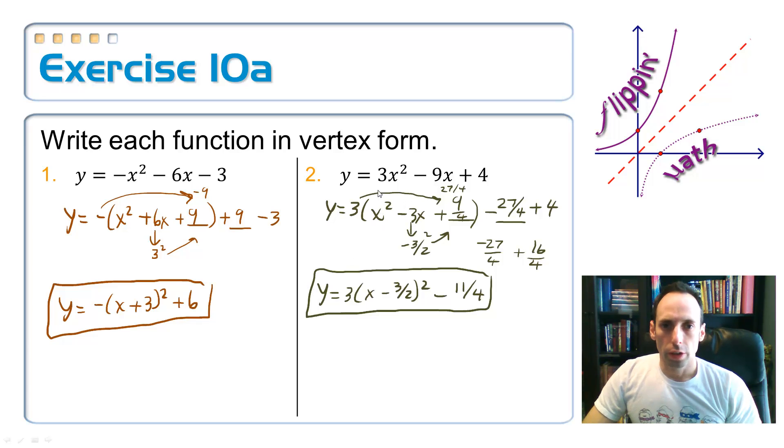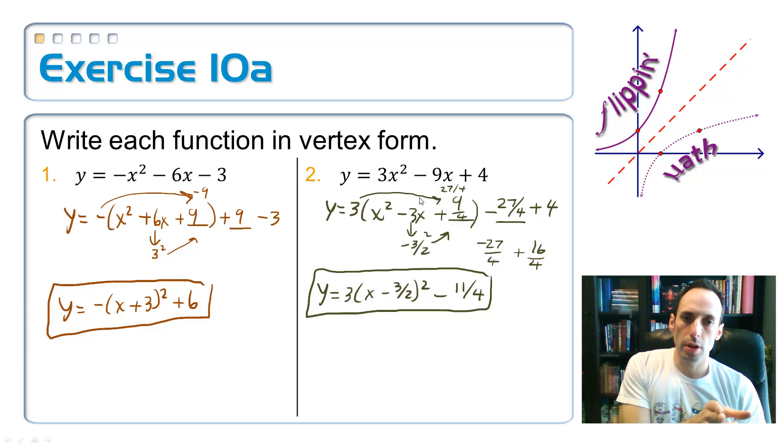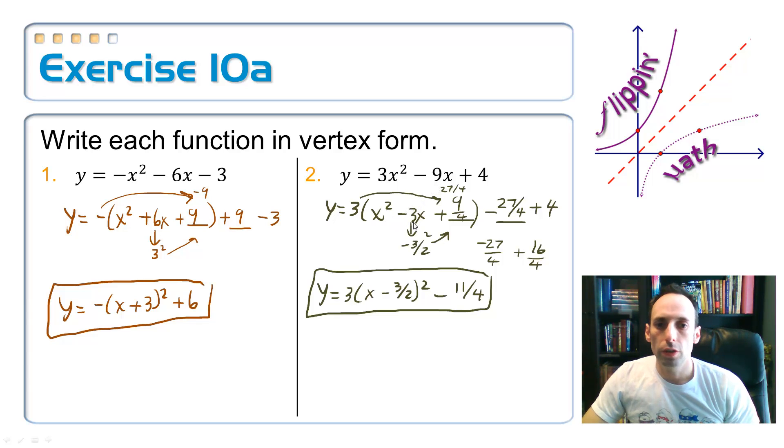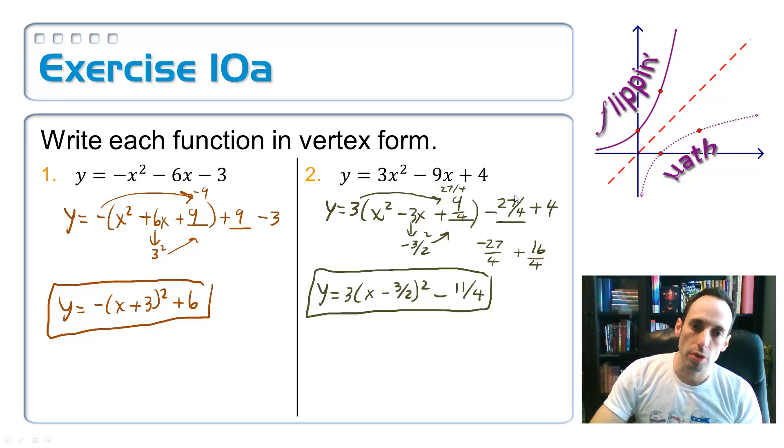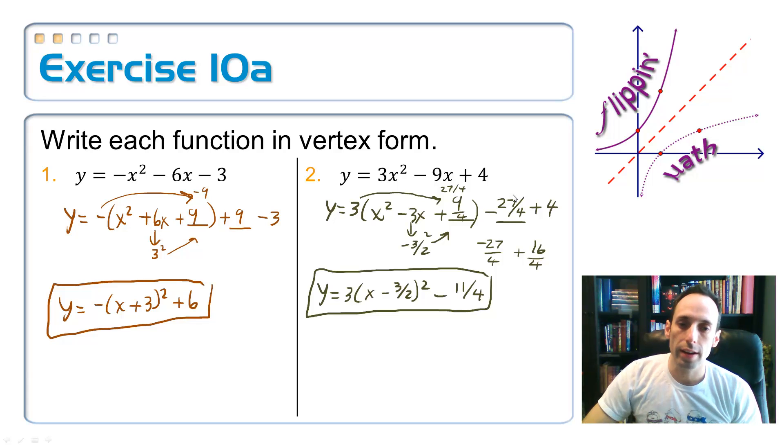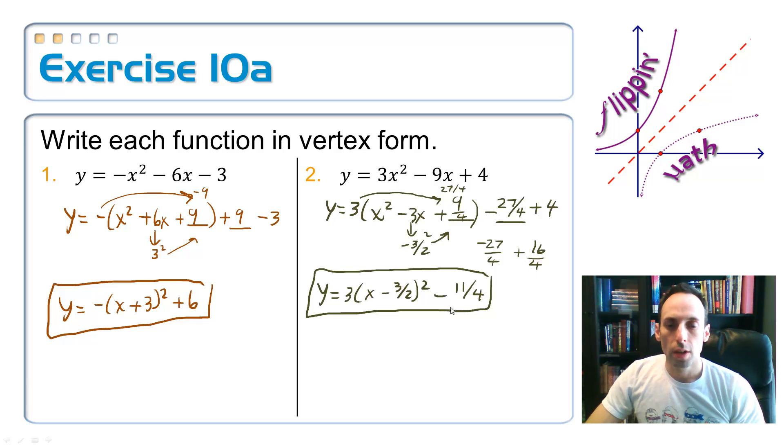Number two. You're going to factor out a 3 from the first two terms, not the 4. Shove it off to the side. Now when you do that, you create an odd middle term. Sometimes it's unavoidable, which means when you take half of it, you're going to get a fraction there. Keep it as a fraction. Square it up, 9 fourths. But distribute the 3 back to it, and you get 27 fourths. So I added 27 fourths. You have to subtract 27 fourths to counteract those two things. And then this is me down here getting a common denominator and adding those two things up. So your final equation is y equals 3 times x minus 3 halves squared minus 11 fourths.